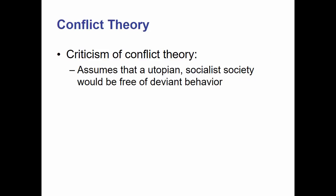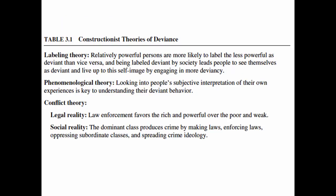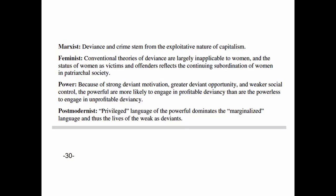There are some criticisms of conflict theory. Conflict theory assumes that a utopian socialist society would be free of deviant behavior, and that everything can be blamed on inequalities in society and the capitalist system. Obviously that's not the whole truth, even though it is a major assumption of conflict theory. Not everything comes down to power imbalances, but a lot of things do, so conflict theory is relatively useful. Here we have Table 3.1, which lists our constructionist theories of deviance — also listed in your book — showing how conflict theory, labeling theory, and phenomenological theory lay out, with a further breakdown of each.